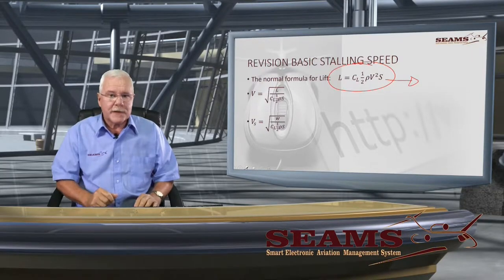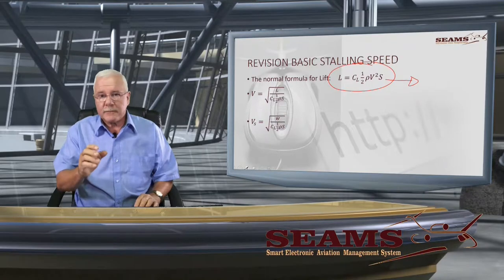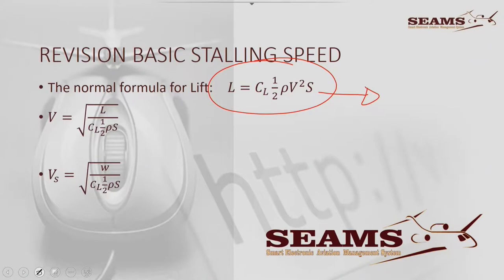Later on we're going to see how we operate the aircraft inside its operating envelope. On here we can see we've actually got two basic formulas. The first one is just V that we derived from the lift equation — a straightforward deduction as we've seen before.